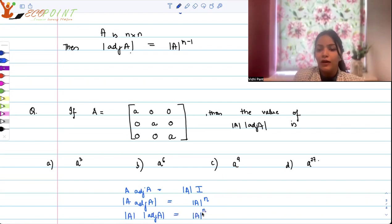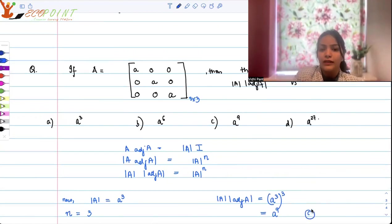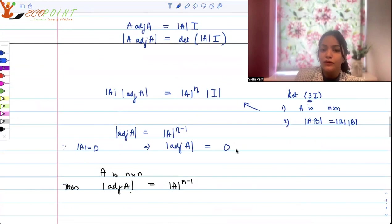In this question what is determinant A? In this question determinant A, it's a diagonal matrix so just the product of the diagonal entries which is A cube, A into A into A and secondly what is n? n is 3 because it's a 3 cross 3 matrix so order is 3 so which means the answer to our question determinant A into determinant adjoint A will be equal to A cube to the power 3 so that means it's A to the power 9. The correct answer is option C A to the power 9 and the correct option for the previous question was A that the determinant of adjoint A is also 0. Thank you very much I hope this helps.